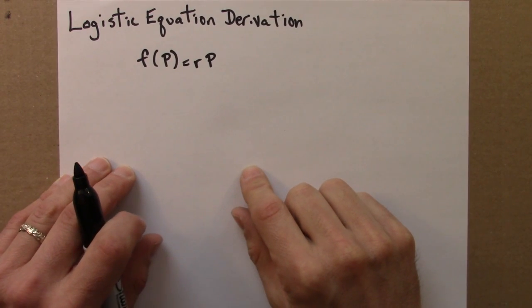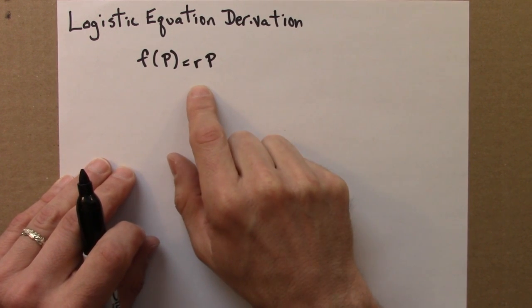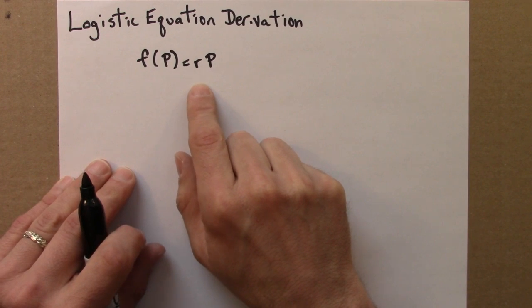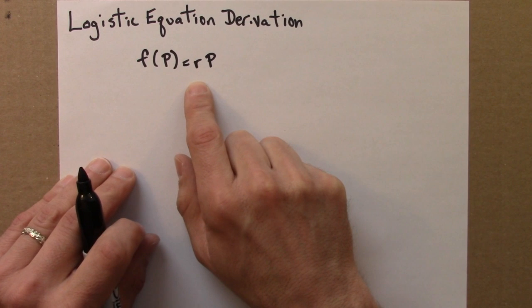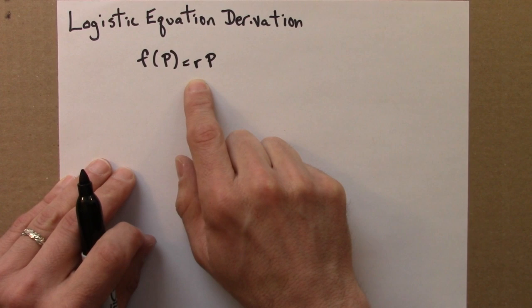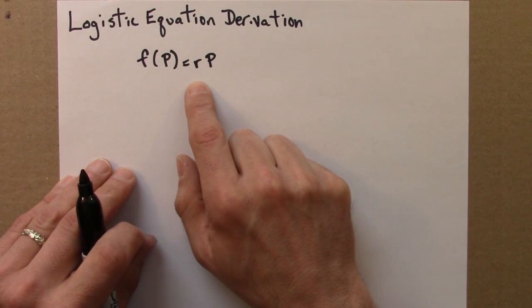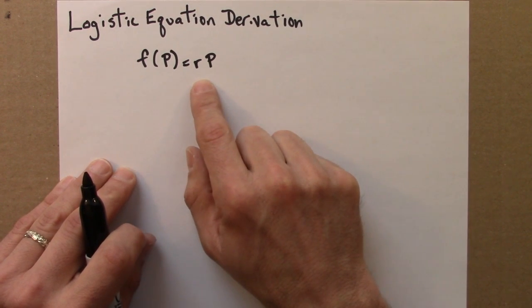Our starting point for the logistic equation is the simple model that I discussed in the last video, f of p equals rp. This has the rather unrealistic feature that populations grow without bound. The world would be completely taken over by rabbits in the previous example. We know that's not the case because we can move about the world without hitting rabbits. So we know that in general populations don't grow forever.